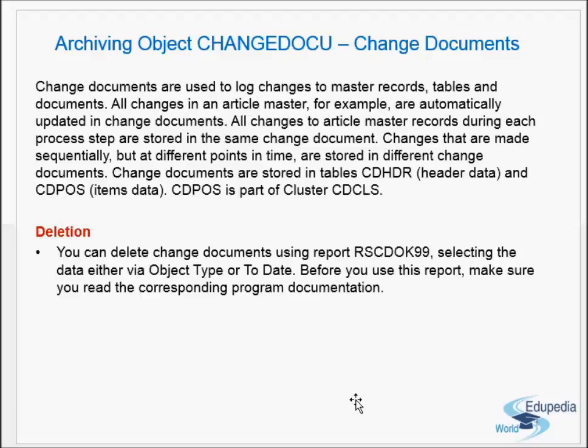For example, any changes made to article master records are automatically recorded as change documents. For tables or documents where changes are automatically recorded as change documents, we do not need to activate table logging — that is an important point to remember.